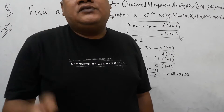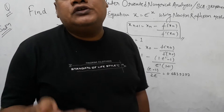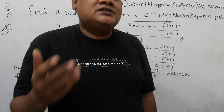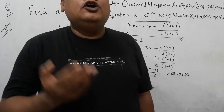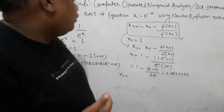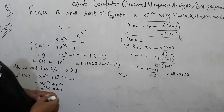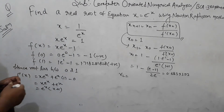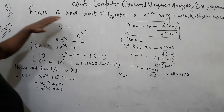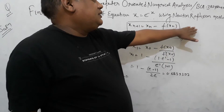Newton's Raphson Method — we have studied its derivation. The student has studied its base. So in this sequence, our most important number is to find a real root of an equation. x is equal to 1/x using Newton's Raphson Method.